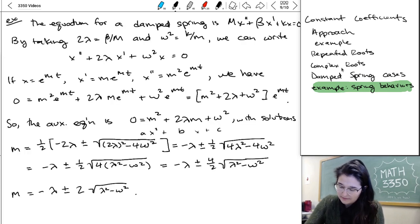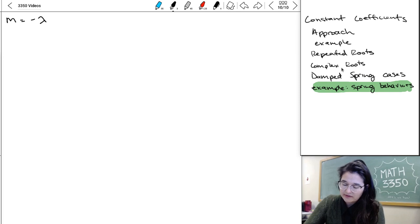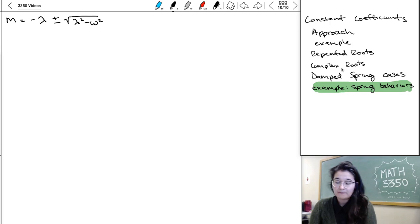So we're thinking about the two roots, m1, m2, being negative lambda plus or minus the root of lambda squared minus omega squared. Lambda and omega are calculated from our mass spring coefficient and damping coefficient. So given those values, you would have numbers for lambda and omega. And the thing we're going to wonder is what kinds of roots do we get for different numbers that we plug in?